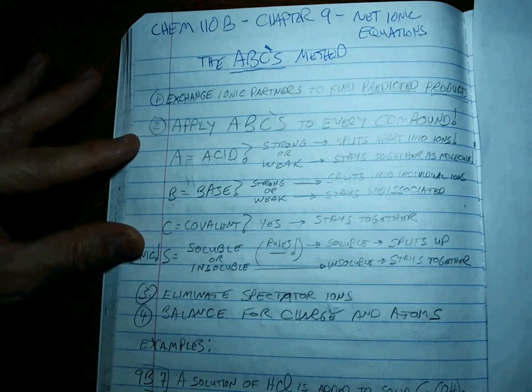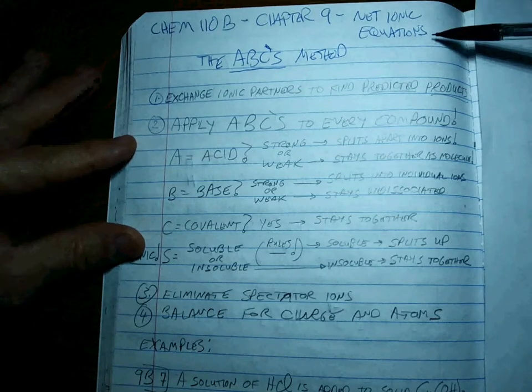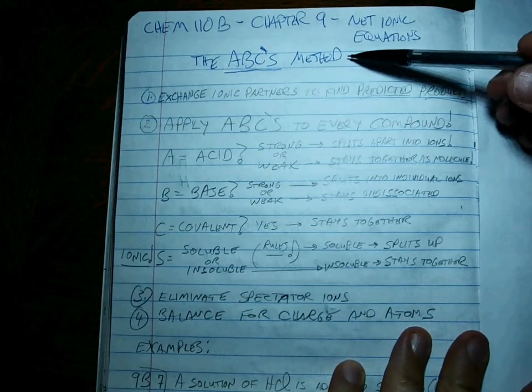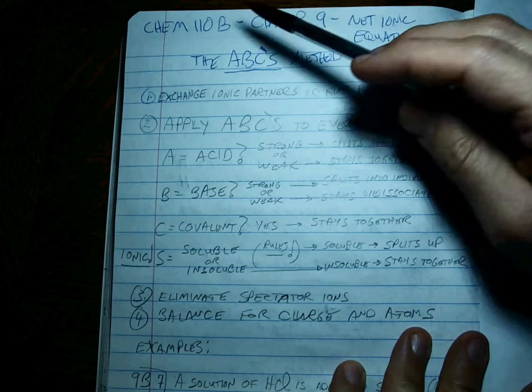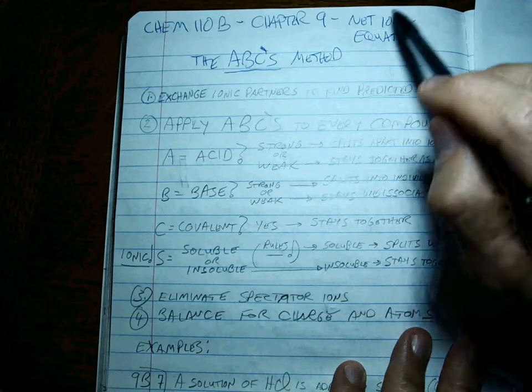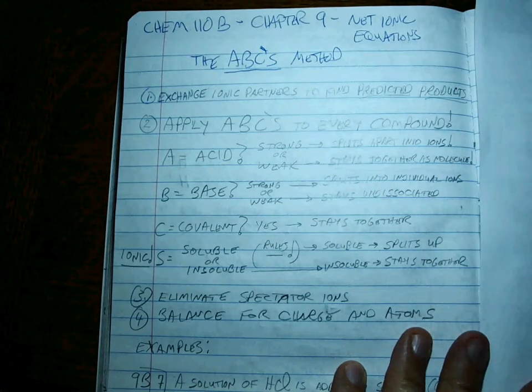Okay, this is a little bit of bonus coverage on chapter 9 for net ionic equations. This is probably most useful in Chem 115, but we'll go with it. Chem 110B, we're talking about the ABC method with net ionic equations.